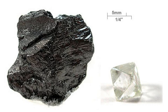The allotropes of carbon include graphite, one of the softest known substances, and diamond, the hardest naturally occurring substance. It bonds readily with other small atoms, including other carbon atoms, and is capable of forming multiple stable covalent bonds with suitable multivalent atoms.